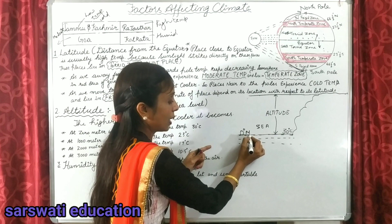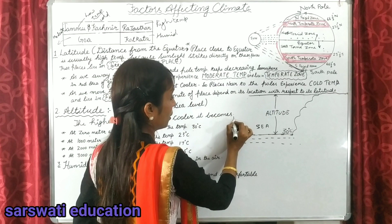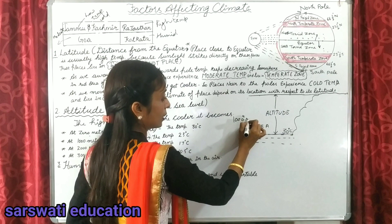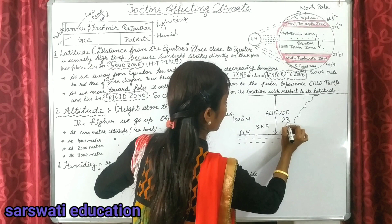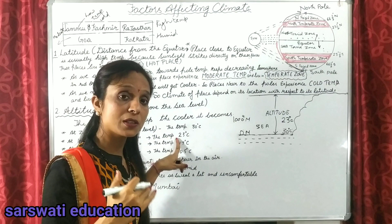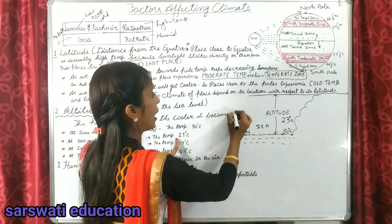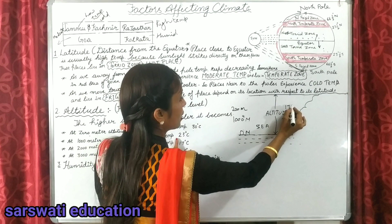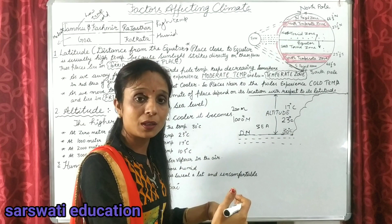At sea level — zero meters — our temperature is 30 degrees. At one thousand meters, our temperature becomes 23 degrees. Our temperature keeps decreasing as we move upward.